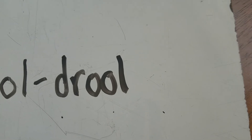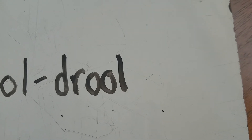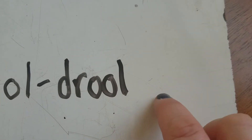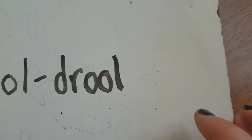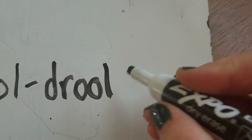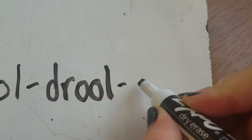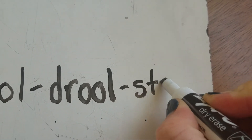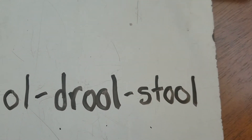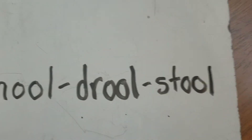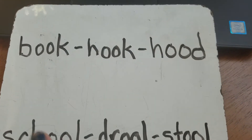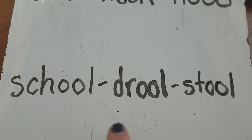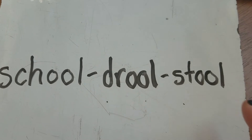And then we turn drool into stool. DR is a blend, and now we're going to do another blend. We drop D-R and do stool: ss, tuh, uuul — stool. I sit on the stool. So we turned book into hook into hood, and school into drool into stool.